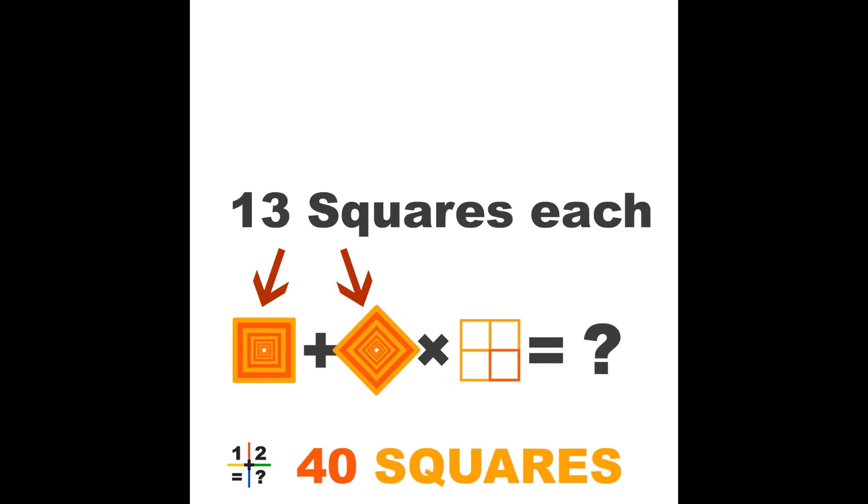If they have 13 squares, then this means that the first and the last square must be the same. So we start with yellow and we end with yellow. Conclusion: we must have 7 yellow squares and 6 orange squares in one object.